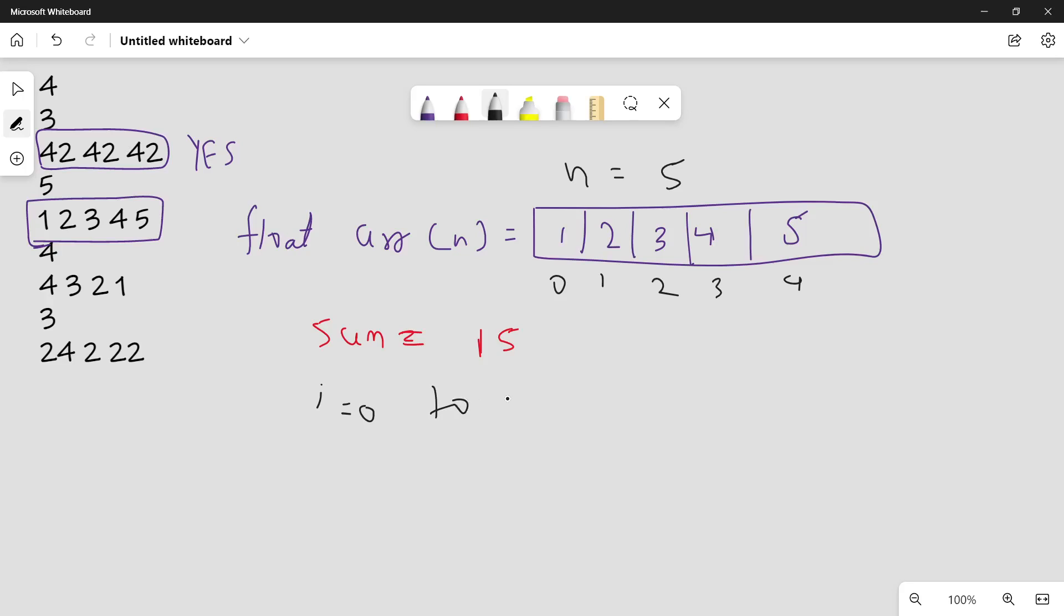And iterate over all these elements from 0 to n minus 1. Iterate over all these elements and check whether the sum minus the i-th element divided by n minus 1 is equal to the i-th element or not. Calculate this value and divide it by n minus 1 and check whether it equals this. If this condition satisfies, you can print yes, otherwise you will print no.